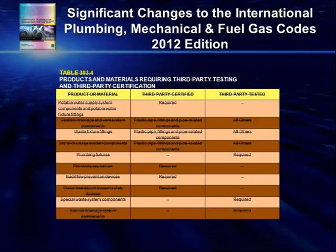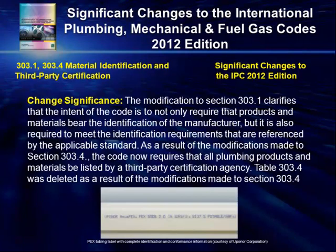As you can see in this example, the graphics are detailed and colorful. The strikethrough indicates the deletion of table 303.4. Shown on your screen is a typical layout of the change significance. This is where the author provides a commentary and his or her opinion of the significant change.